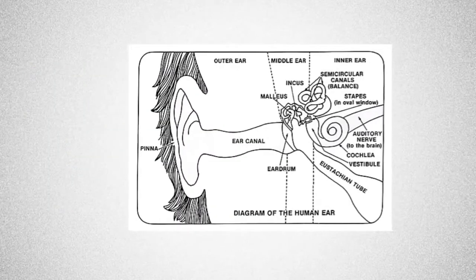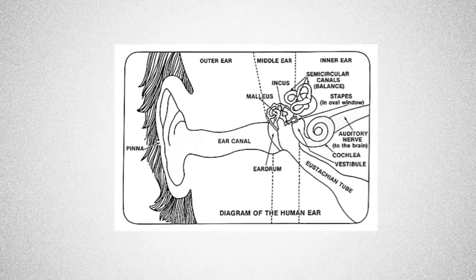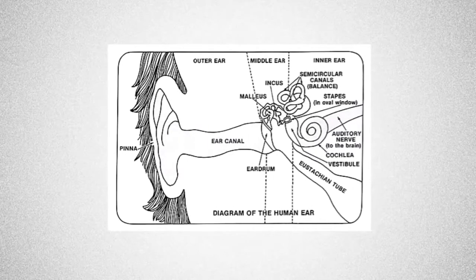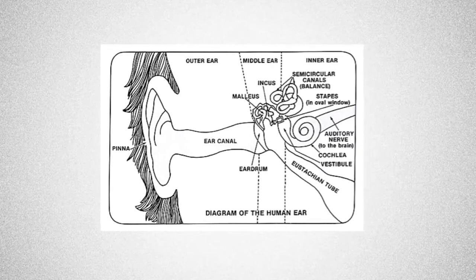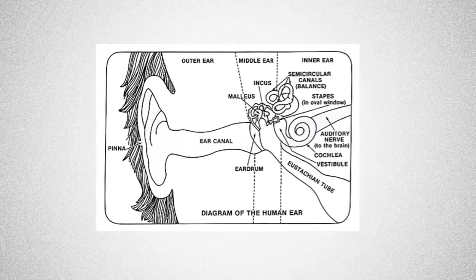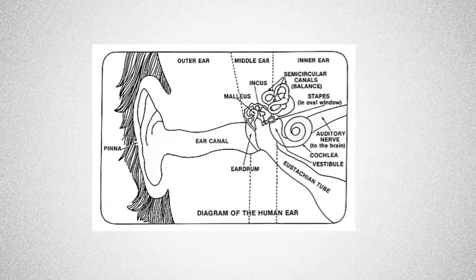This image here shows a basic outline of the human ear, and as you can see it is broken into three sections: the outer ear, the middle ear, and the inner ear. We're going to have a look at the structures in each and their different functions.